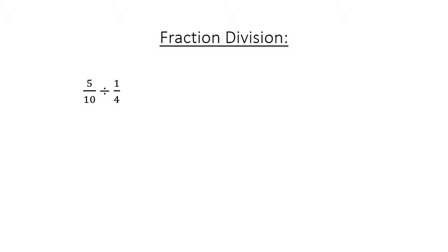Fraction division. 5 over 10 divided by 1 over 4 equals 5 over 10 times 4 over 1 equals 20 over 10 equals 2.